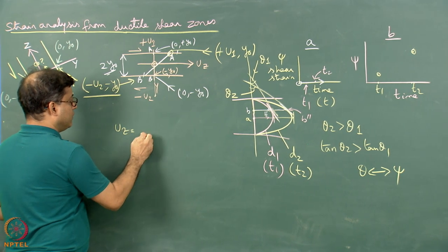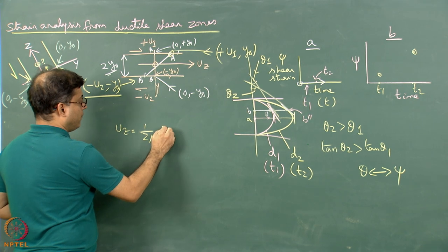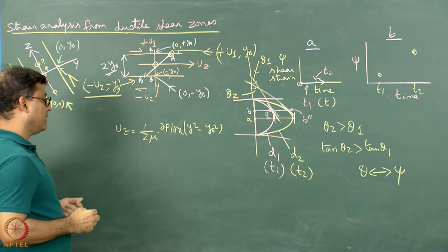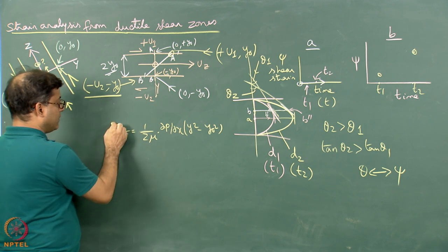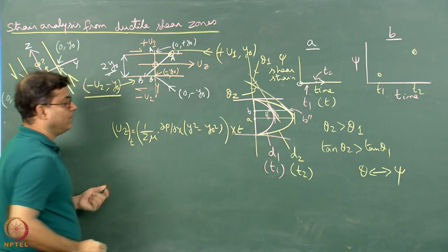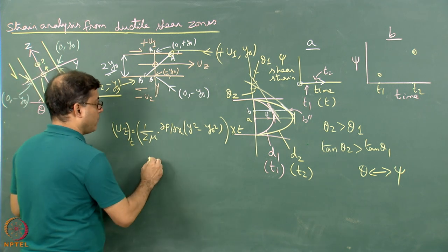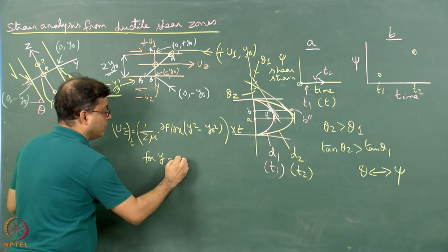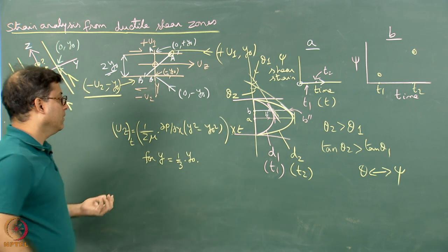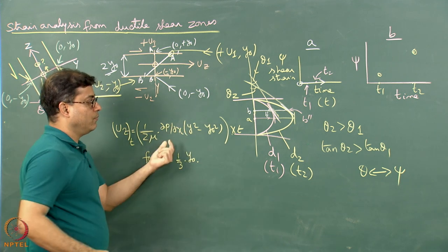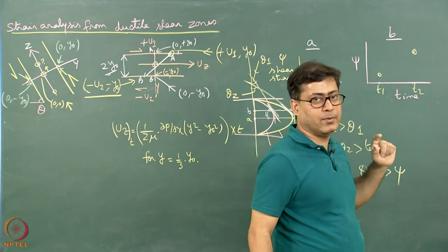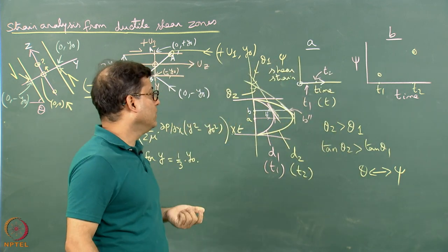The displacement profile equation is: Uz = (1/2μ)(∂P/∂x)(y² − y₀²). Multiplying by time T gives the displacement profile at time T. Choosing any point, say y = y₀/3 (point B), it is possible to find the equation of the tangent at that coordinate, how much angle it makes with the y-axis, and then plot the progressive shear strain behavior for that point over time.